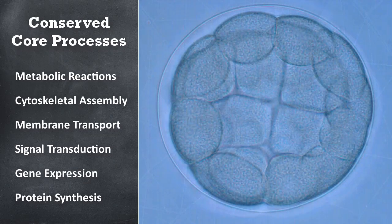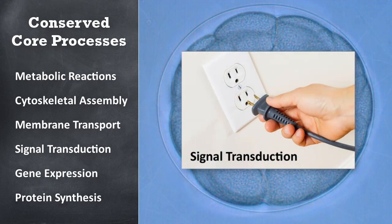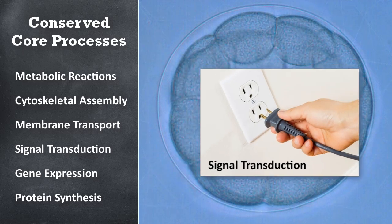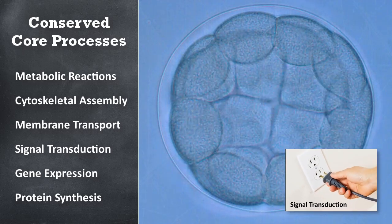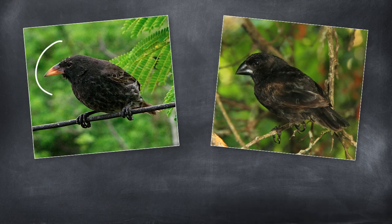In cells, conserved core processes are linked to signal molecules via universal signal transduction systems that evolved eons ago. The signals are minimally instructive, yet capable of triggering conserved core processes in varying amounts, times, and locations within developing organisms.